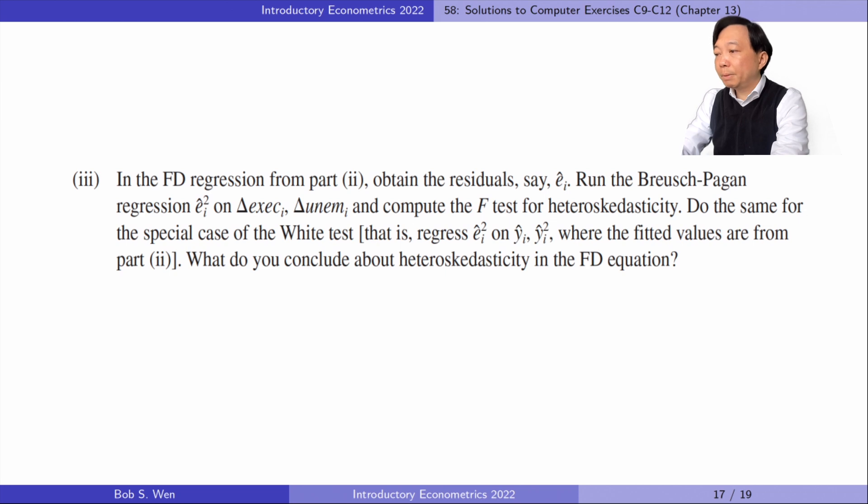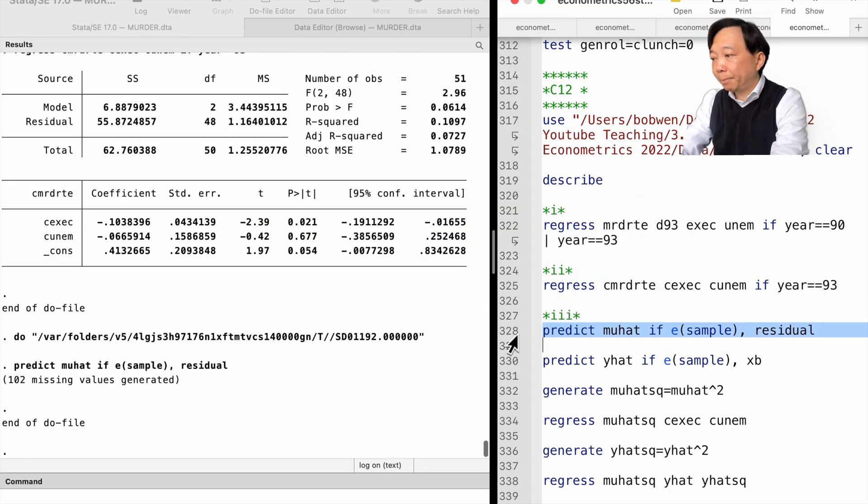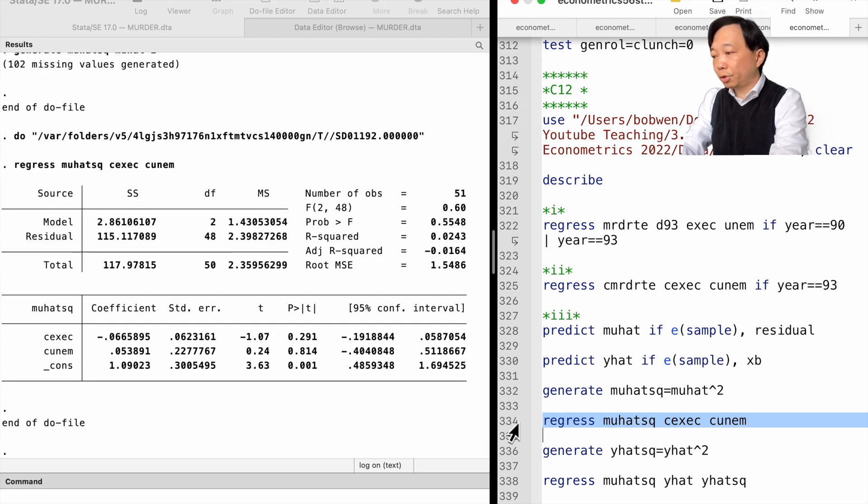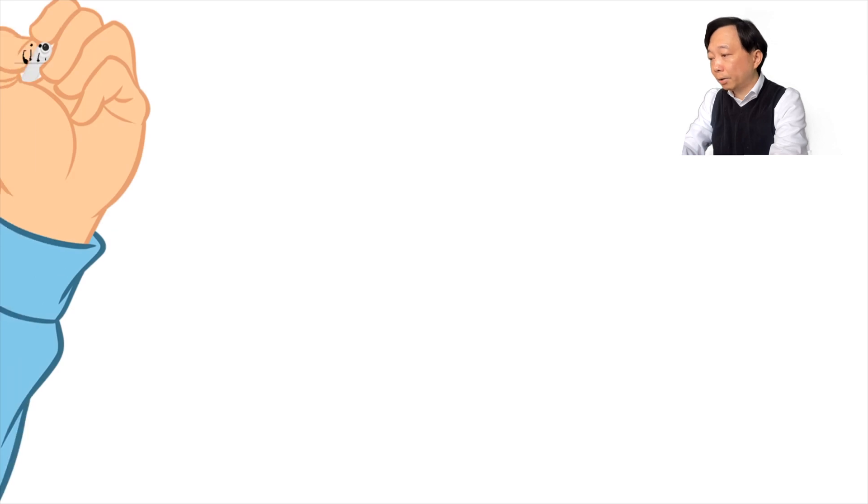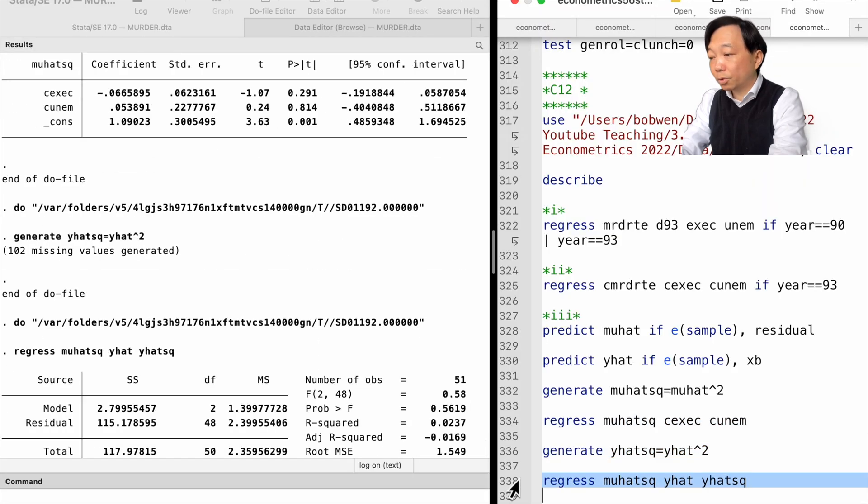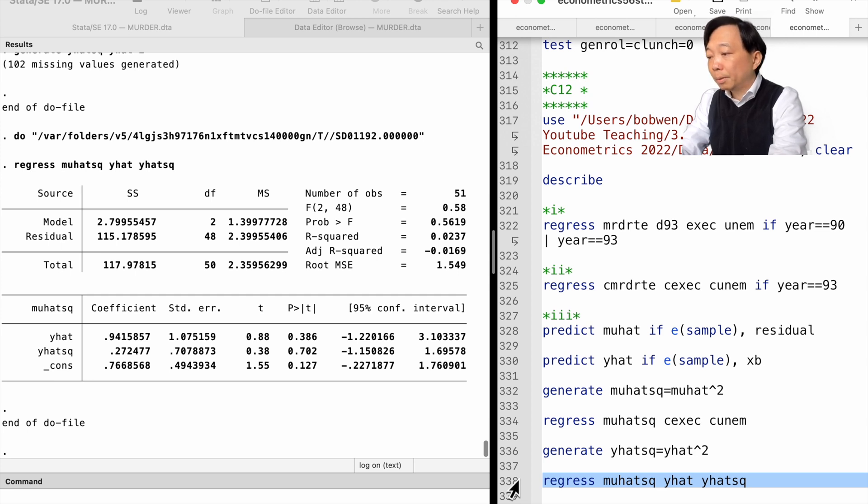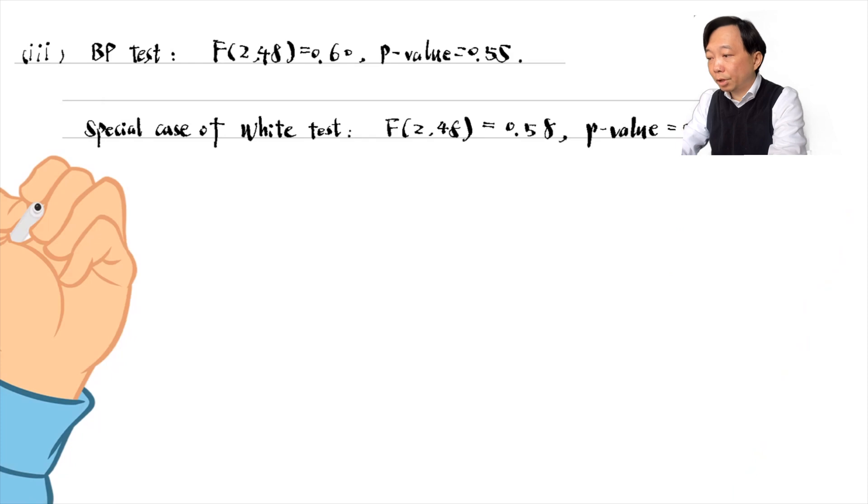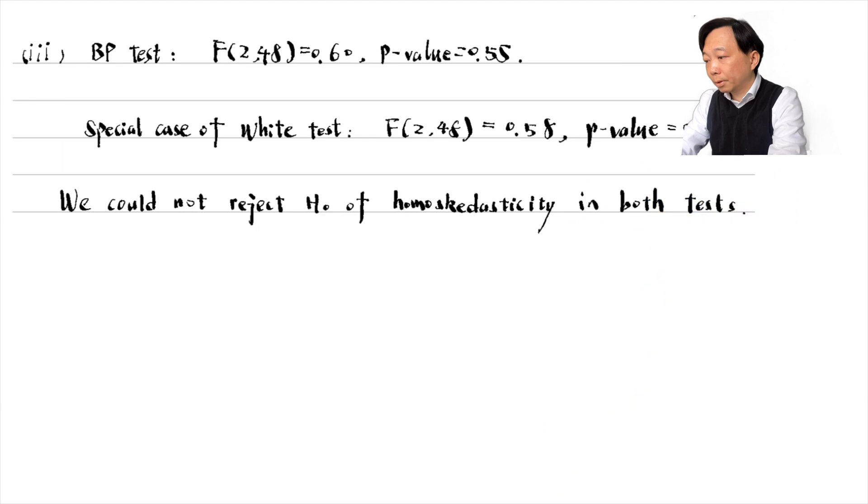In part 3, we do the BP test for heteroscedasticity of the error term in part 2. We use the predict command to obtain the residuals and then generate the squared residuals. To do the BP test, we regress the squared residuals on the two explanatory variables in part 2. The F statistic for the joint significance is 0.60 and its p-value is 0.55. To do the special case of the White test, we regress the squared residuals on the fitted value and the squared fitted values from part 2. The F statistic for the joint significance is 0.58 and its p-value is 0.56. We fail to reject the null hypothesis of homoscedasticity in both tests. There is no heteroscedasticity in the first difference equation.